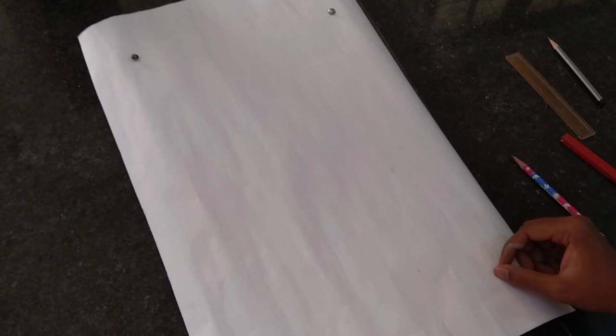Fix the drawing sheet to the drawing board by using only brass pins because iron pins can influence the magnetic field of the bar magnet.